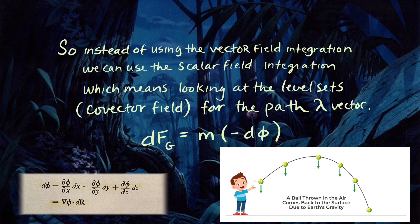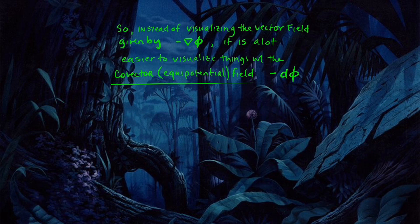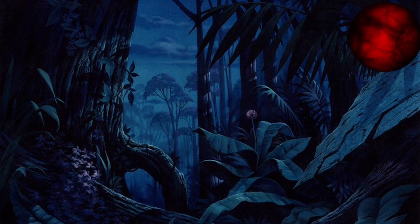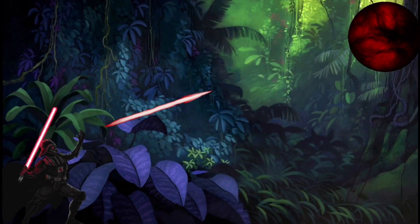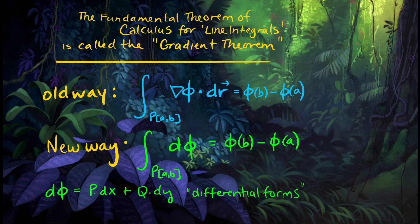Instead of using the vector field integration, we can use a scalar field integration, which means looking at the level sets or covector fields for the path. The differential df of the field is equal to a proportional constant of the negative differential dφ. It is easier to visualize things with these covector equipotential fields than it is to actually look at the vector fields themselves. There's a deep connection between the vector fields and the covector fields. Covector fields actually live in something called the dual space.